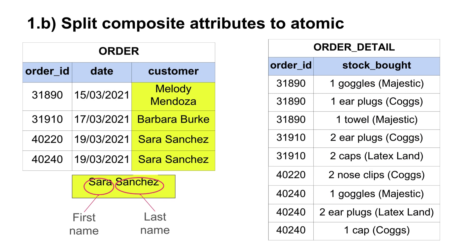Similarly, we can find another composite attribute in the customer attribute of the order table. The customer attribute appears to be a composition of the customer's first name and their last name, so we have to split that attribute into two atomic attributes as well.